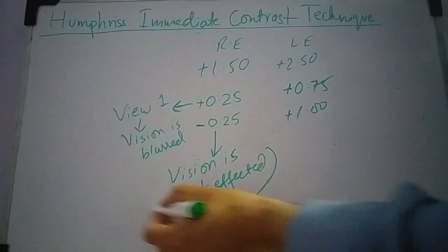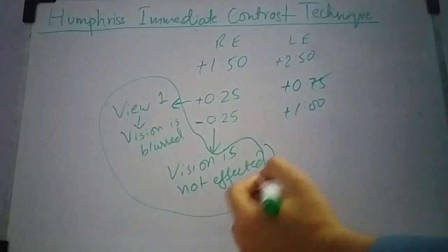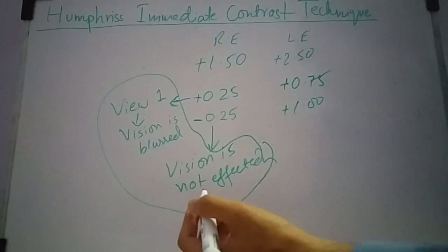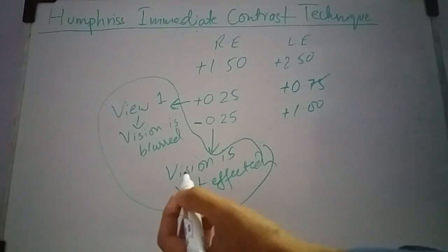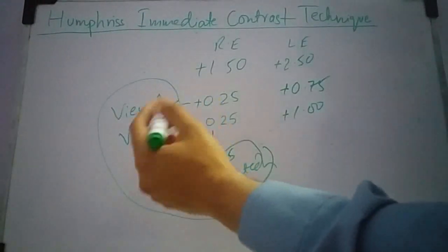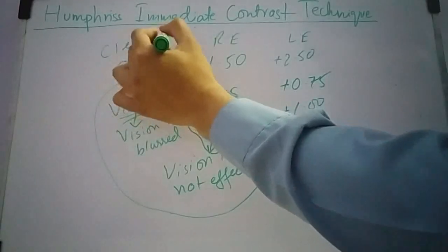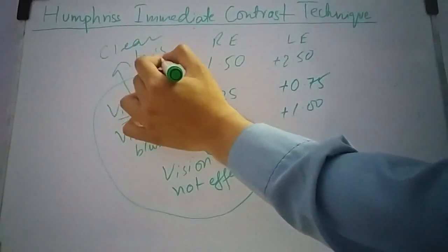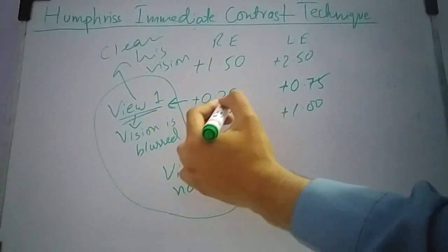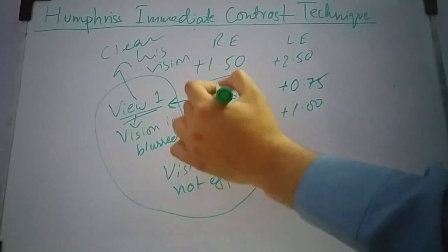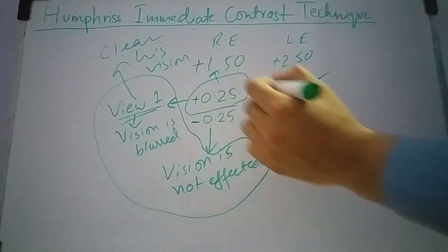This is the ideal result. If the patient says that view 1 has cleared their vision, then I will add plus 0.25 in this eye and also in the other eye.